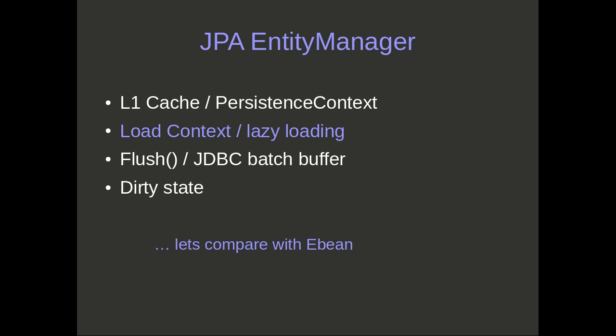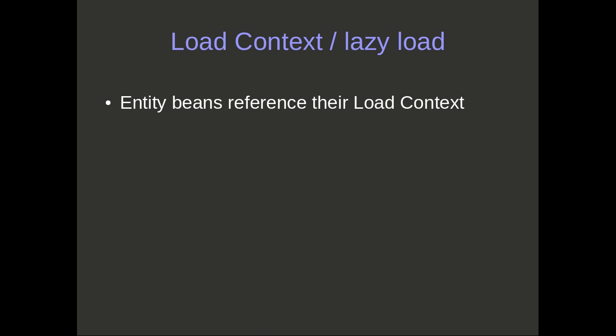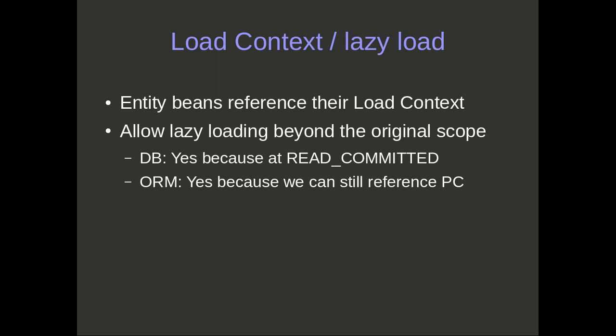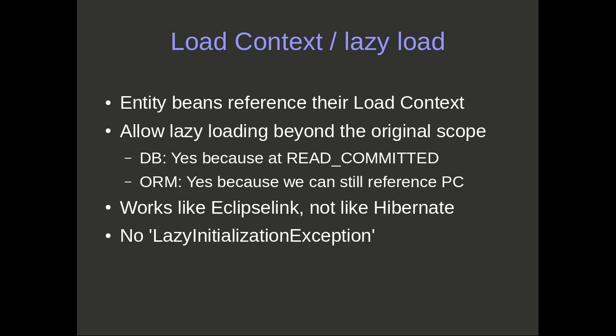Now let's look at lazy loading. With eBean, the entity beans reference their load context, and eBean allows lazy loading beyond the original scope. From a database perspective, this is fine — we're running at read-committed isolation level. From an ORM perspective, eBean enables this by having a reference back to the persistence context, so we can continue lazy loading and build a consistent object graph. This works like EclipseLink but not like Hibernate — there's no lazy initialization exception. The difference between eBean and JPA will depend on which JPA provider you're comparing to.